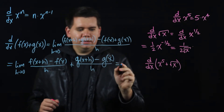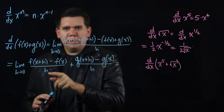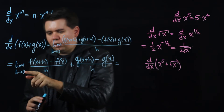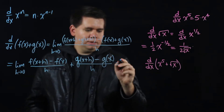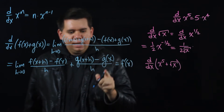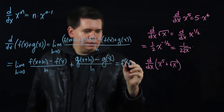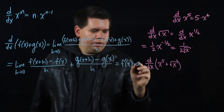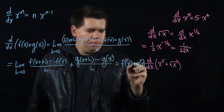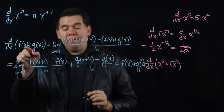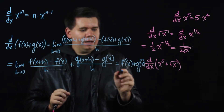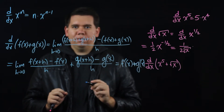Notice this first expression here is just, as you take the limit as h goes to 0, the derivative of f at x. And this second piece is just the derivative of g at x. So you end up with: the derivative of f plus g is the derivative of f plus the derivative of g.